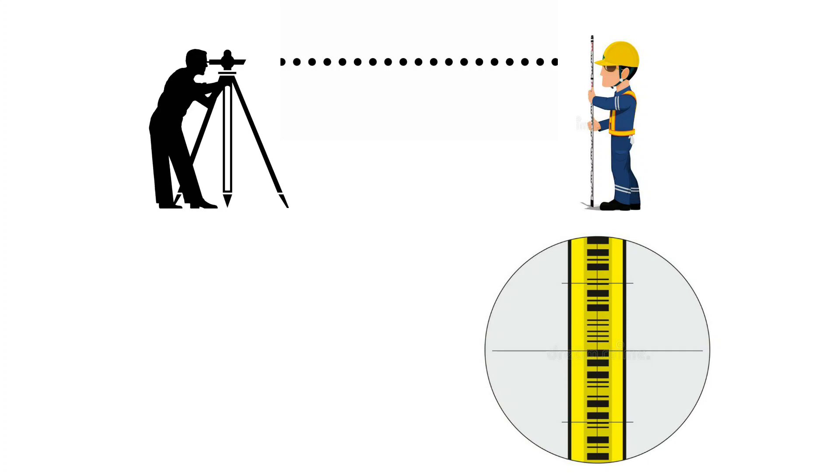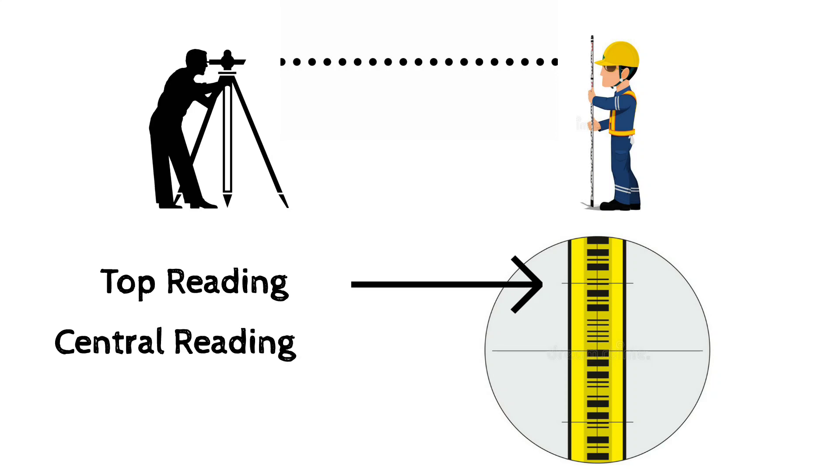You should take three stadia readings on each station as shown below: top reading, bottom reading, and central reading on each station.